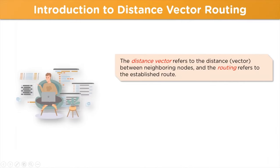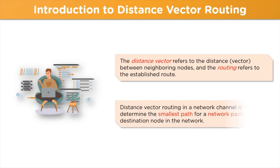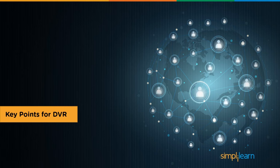Distance Vector Routing refers to the distance or the vector between neighboring nodes in a network channel, and the routing part refers to the established route through which data packets are transmitted. Another aspect of this routing protocol is to determine the shortest path for a data packet to reach its destination.